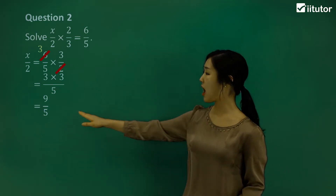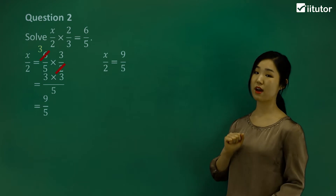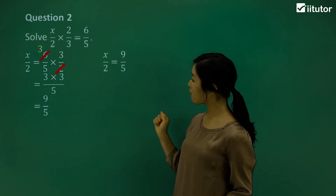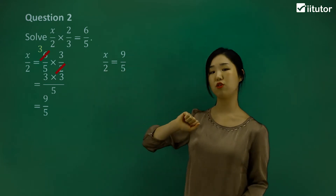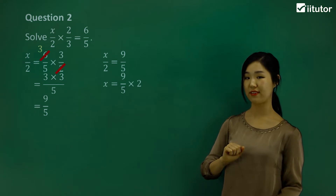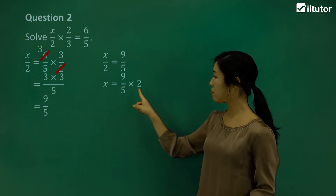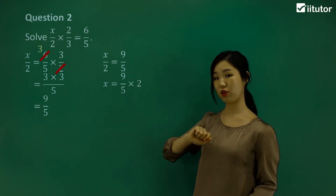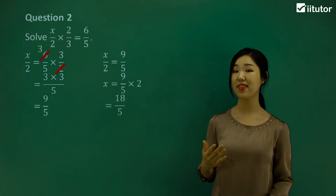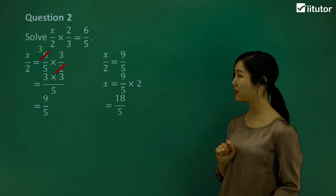We're not done yet because 9 over 5 comes from x on 2 — so x over 2 equals 9 over 5, but we're looking for x. We have to take another step by getting rid of the 2. We're dividing by 2, so let's multiply by 2 onto the other side. Now x is alone: 9 over 5 multiplied by 2. Make sure that 2 only multiplies the numerator, so it becomes 18 over 5. That is the final answer — that is x.